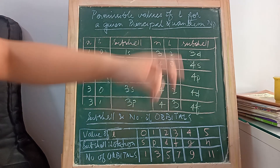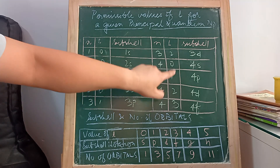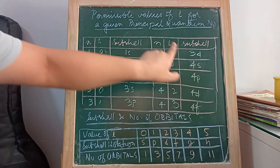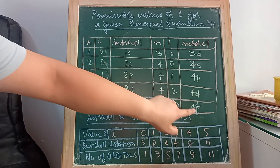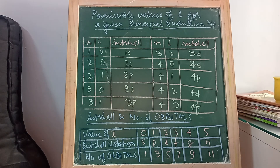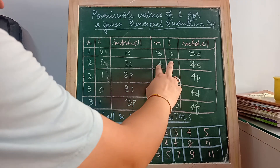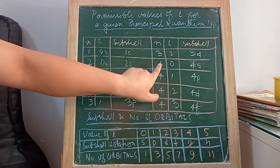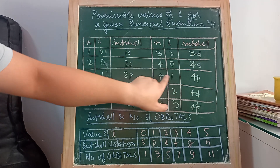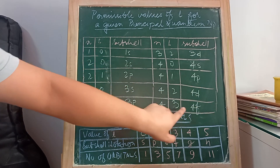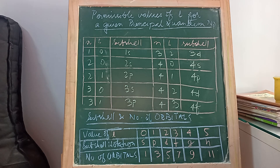For N equal to 4, the possible values of L are 0, 1, 2, and 3. L equal to 0 means s, L equal to 1 means p, L equal to 2 means d, and L equal to 3 is denoted by the letter f. The combination of the principal and the azimuthal quantum number is used to denote the subshell: 4,0 means 4s; 4,1 means 4p; 4,2 means 4d; and 4,3 means 4f.